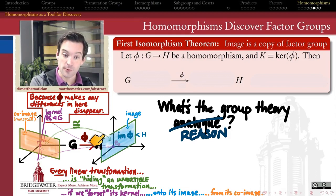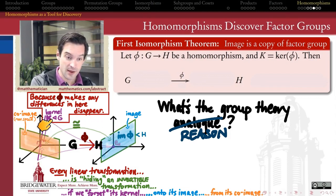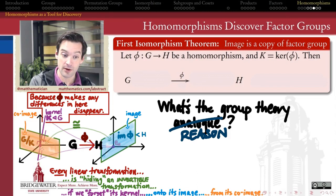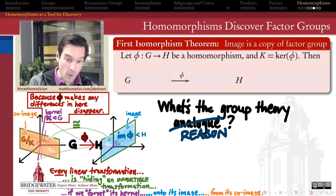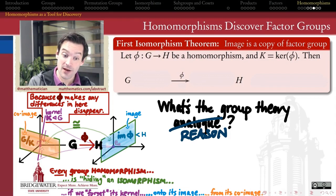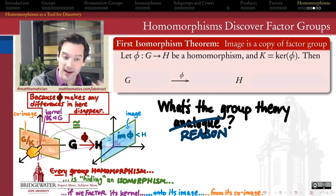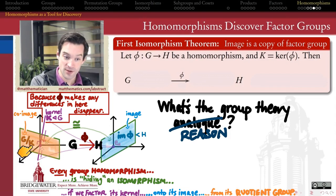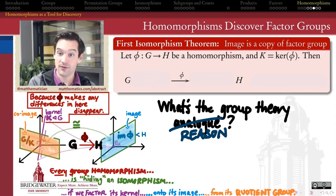What's playing the role of the row space is now the image of phi as a subgroup of H. What's playing the role of the co-image — the orthogonal complement from linear algebra, the stuff that didn't belong to the kernel but which together with the kernel makes up the entire domain — that's now going to be the factor group of G by K. So every group homomorphism is hiding within itself an invertible group homomorphism — an isomorphism — and the way to find it is by factoring away the kernel, thinking about the factor group G mod K onto the image.